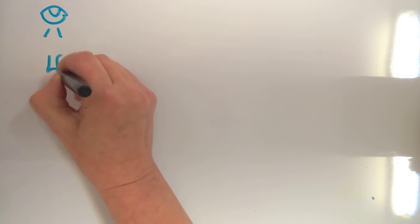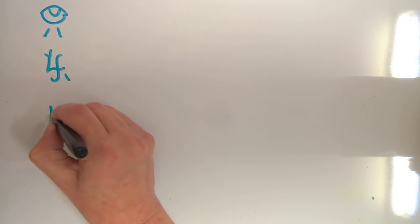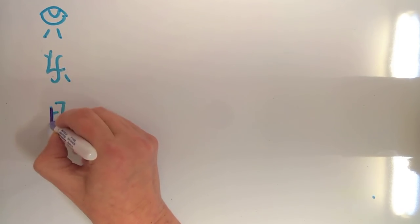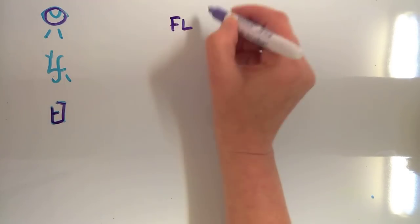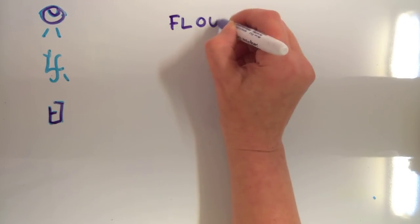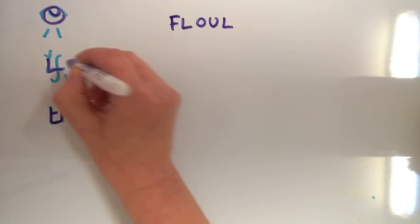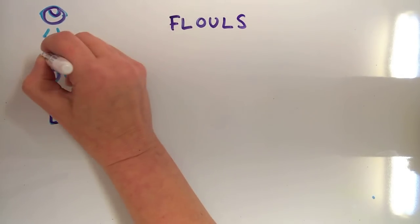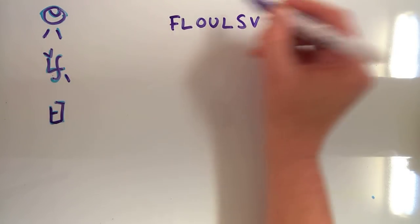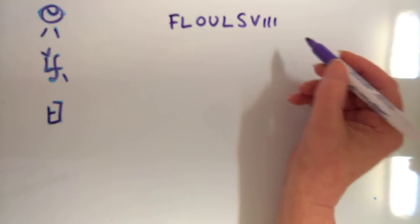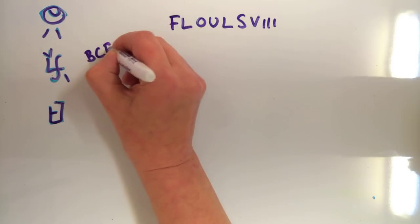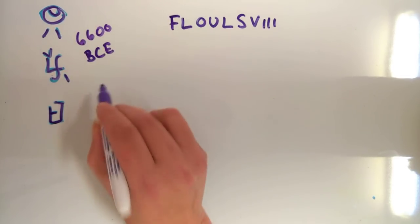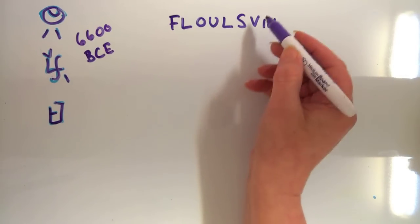I could see English letters in them. I could see the letter F, the letter L, an O, a U, an L, an S, a V, and I've got three lines — one, two, three — and these letters, these symbols here.